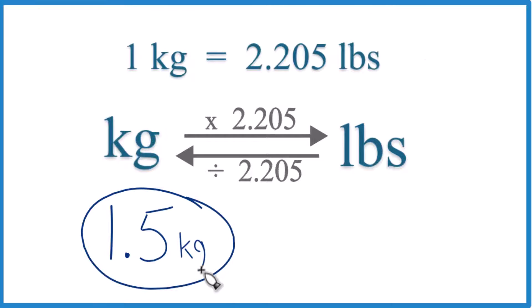Let's convert 1.5 kilograms to pounds. So to do this, what you need to know first is that 1 kilogram equals 2.205 pounds. So if you have 2.205 pounds, you have 1 kilogram. That's the mass there.